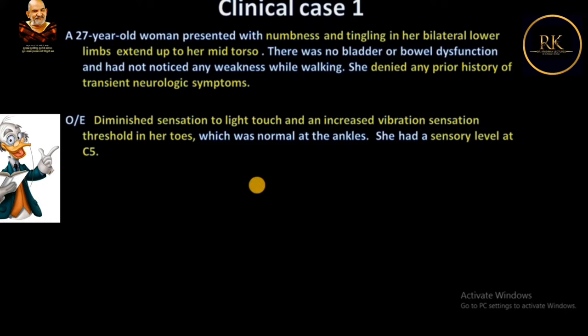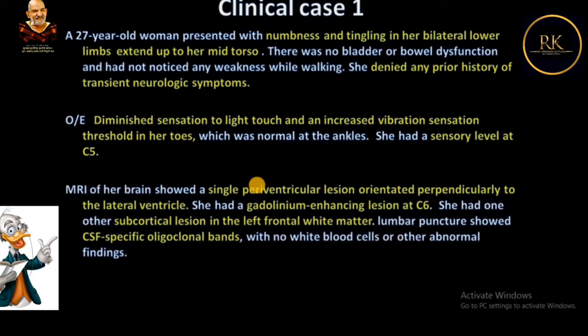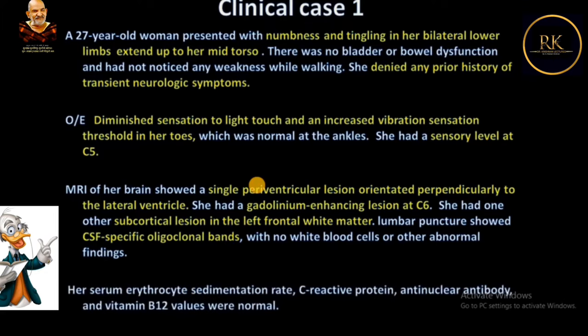She had a sensory level at C5. MRI of her brain showed a single periventricular lesion oriented perpendicular to the lateral ventricle. She had a gadolinium-enhancing lesion at C6 and one other subcortical lesion in the left frontal white matter. On lumbar puncture, she had CSF-specific oligoclonal bands with no white blood cells or other abnormal findings.